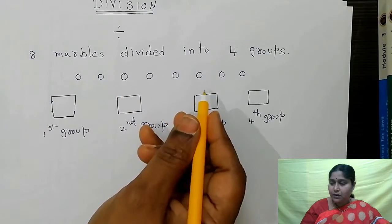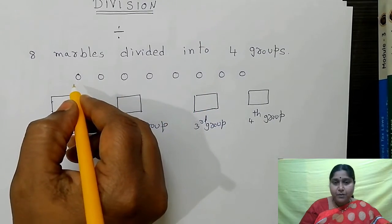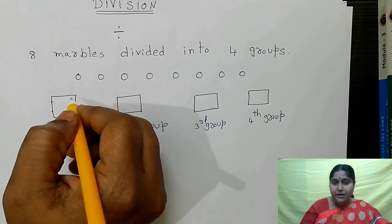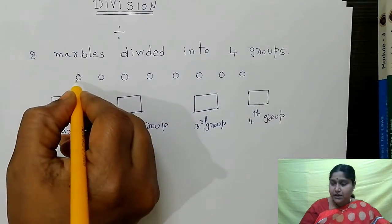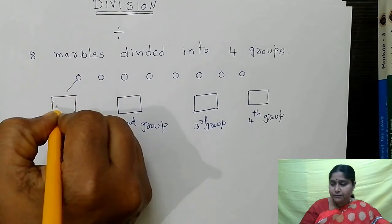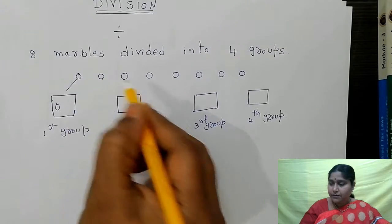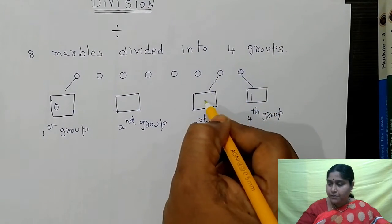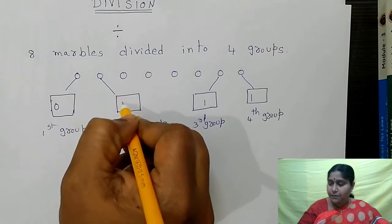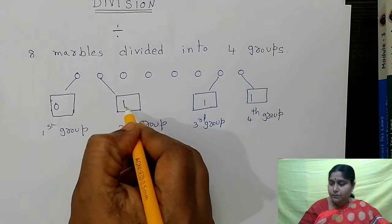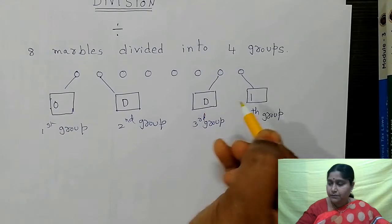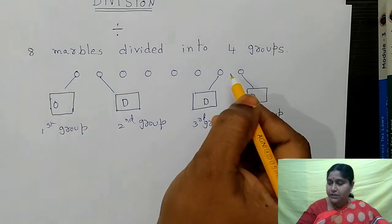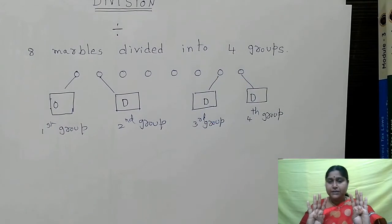See, first, here are 8 marbles. I will put one marble in each of these boxes. Here, one marble. Here, one marble. Here, one marble. Here, one marble. Here, one marble. See, one marble. See, total 8 marbles.